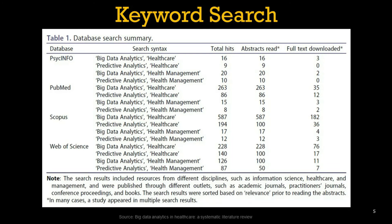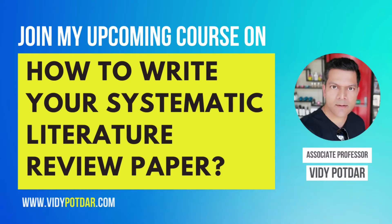If you can see the asterisk sign here, the explanation is that in many cases a study appeared in multiple search results, so they have not removed the duplicates before making this table. When you are doing quality assessment, I already discussed a few tables in the previous session when we covered quality assessment.